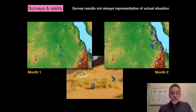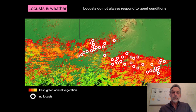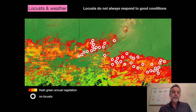Furthermore, the results of surveys may not accurately reflect the current situation. For example, in the first month surveys might find only a few locusts, but then suddenly the next month there are much larger infestations present — suggesting that the first month's sampling was not really reflective of the reality in the field. And of course, it's not as simple as saying whenever there are great ecological conditions there will be increasing locust populations — this often is not the case. In some years when conditions are only average, locusts might respond very well.